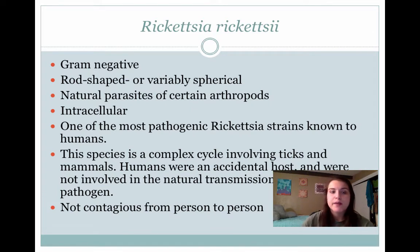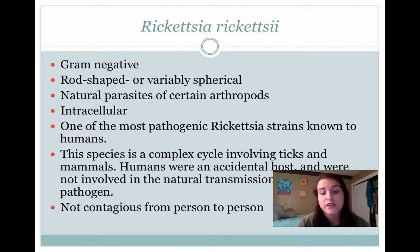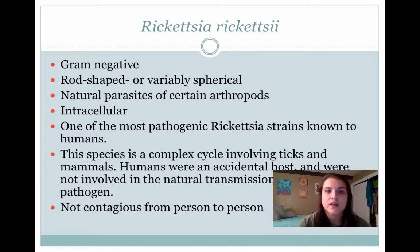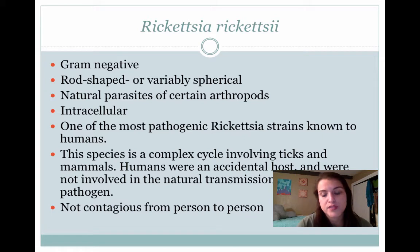Rickettsia rickettsii is a gram-negative bacteria. It's rod-shaped and a natural parasite. It's also intracellular and one of the most pathogenic Rickettsia strains known to humans. The species itself has a complex cycle involving ticks and mammals. Humans, unfortunately, are an accidental host — we weren't actually involved in the natural transmission cycle of this pathogen. Luckily, it doesn't spread from person to person; the tick has to bite another person in order to give them Rocky Mountain Spotted Fever.